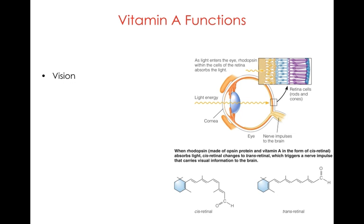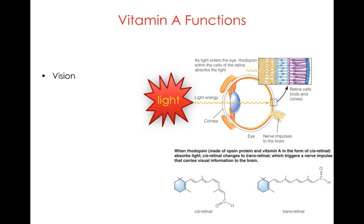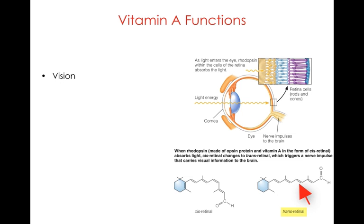This protein rhodopsin is made up of opsin and vitamin A in the form of cis retinol. You may recall we talked about cis and trans fatty acids — we have cis and trans retinol in the eye. When light hits the eye, the cis form is changed into trans retinol, and this triggers a nerve impulse that carries the information to the brain that allows us to see.